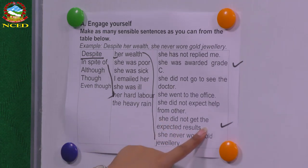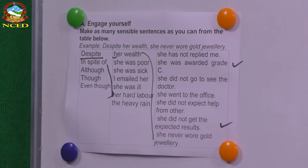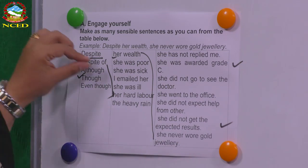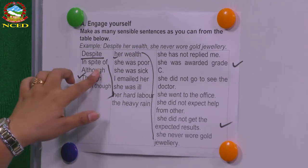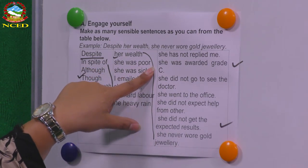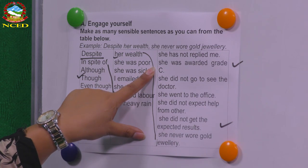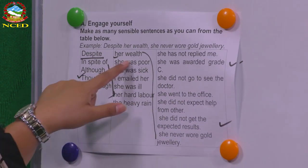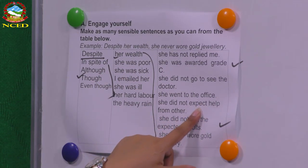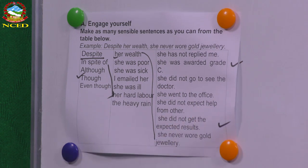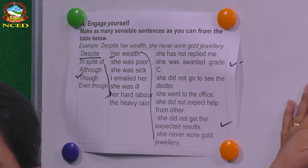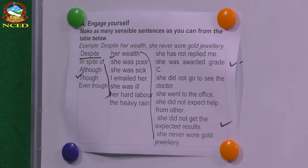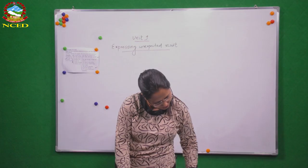Let's try 'although.' After 'although' you need a clause — you can't say 'although her wealth' or 'although her hard labor.' You can say 'although she was poor, she did not expect help from others.' In this way you can make as many sentences as you can. Remember this is a speaking exercise, so you have to speak the sentences out with your friend.